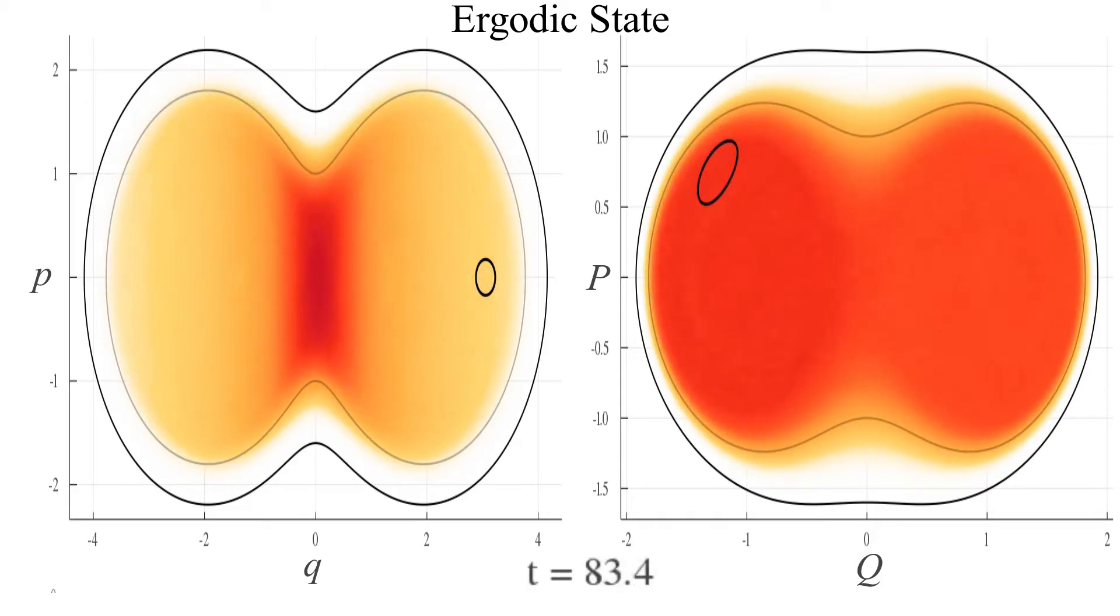This ensemble quickly fills the available phase space entirely. This is what we call ergodicity in statistical mechanics.